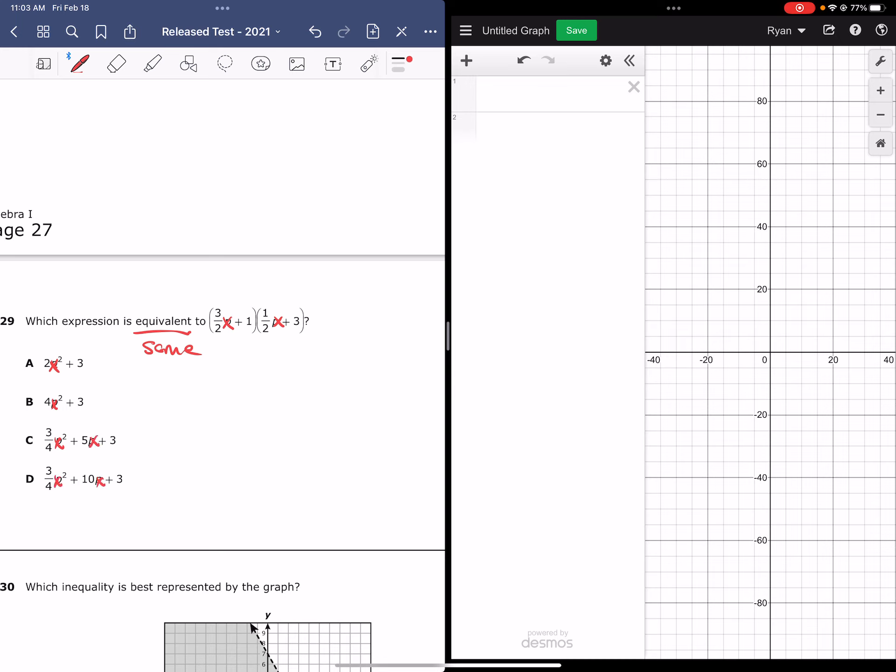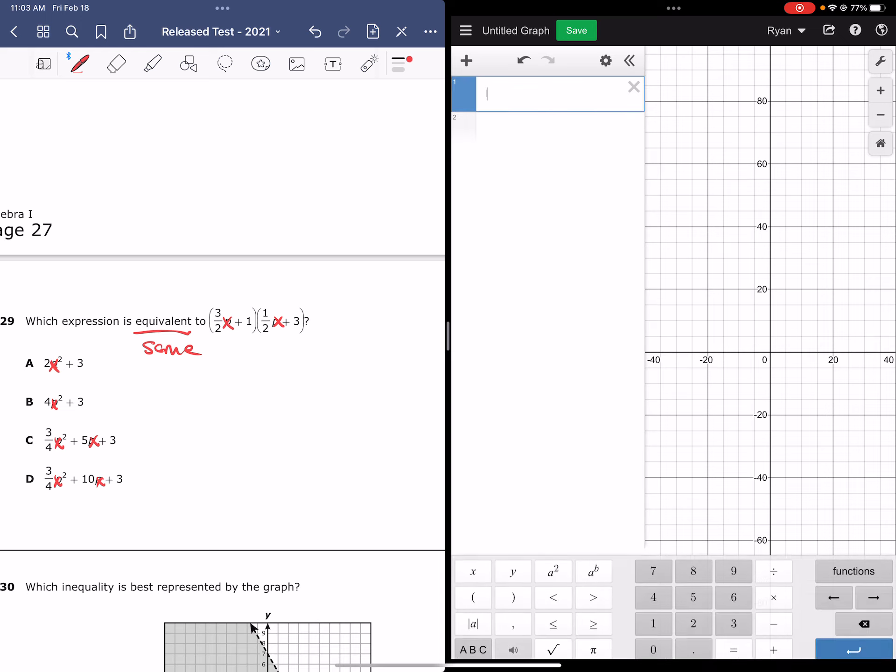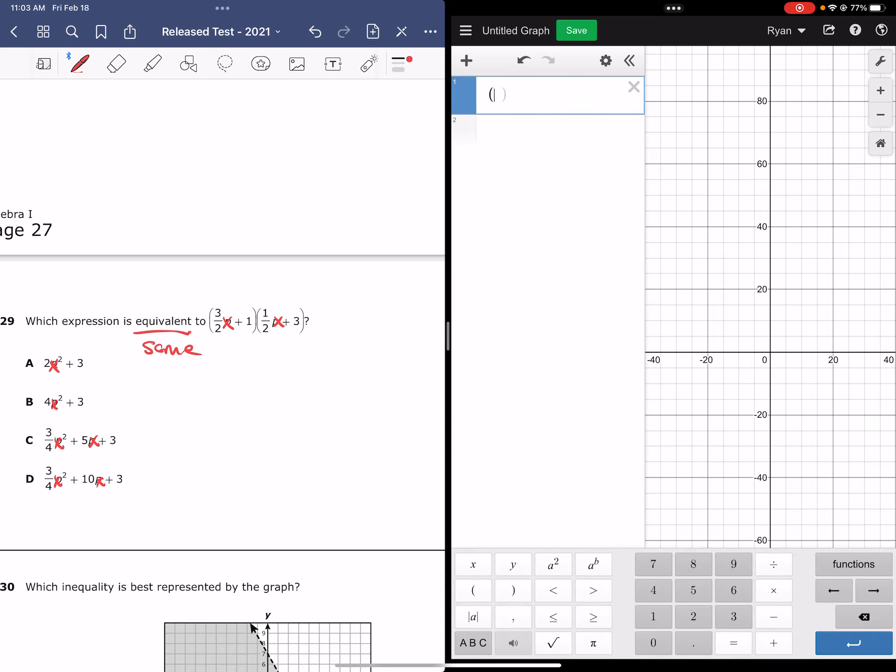If we start with the first answer choice, we're actually going to have to start with the given expression. We'll type that in first, making sure that we replace p with x and making sure that we don't have any typos. And so there is my given expression.